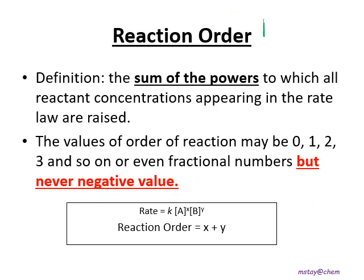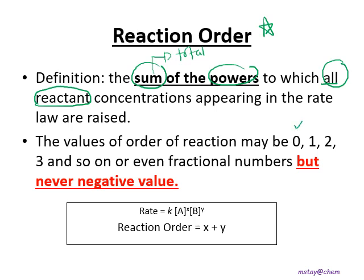Next is reaction order. The definition of reaction order is the sum of the powers of all reactants. The value of the order of reaction can be zero, one, two, or three. Even though we read the values as zero, one, two, three, we say zero order, first order, second order, and third order.